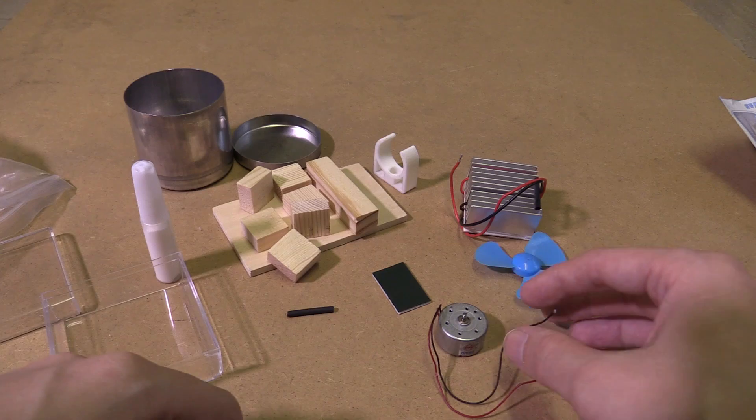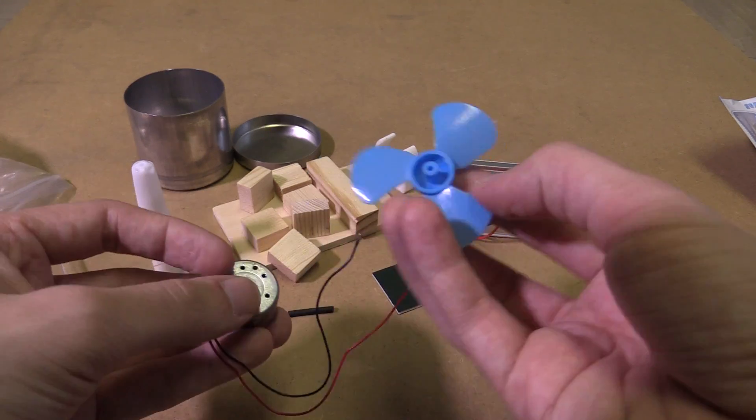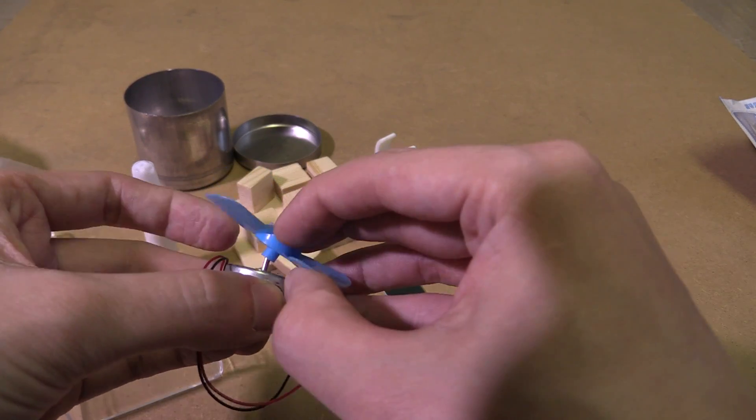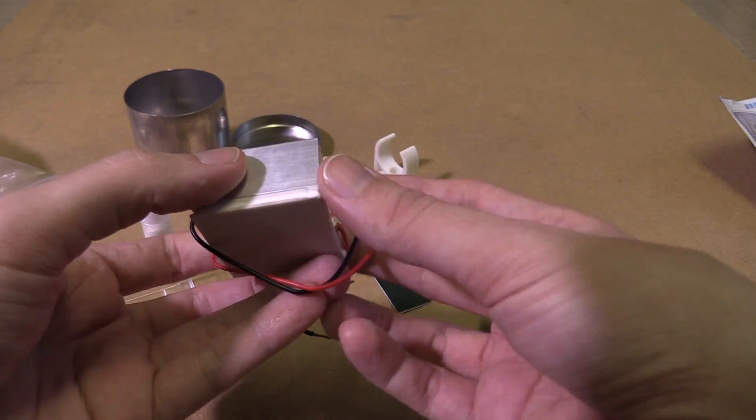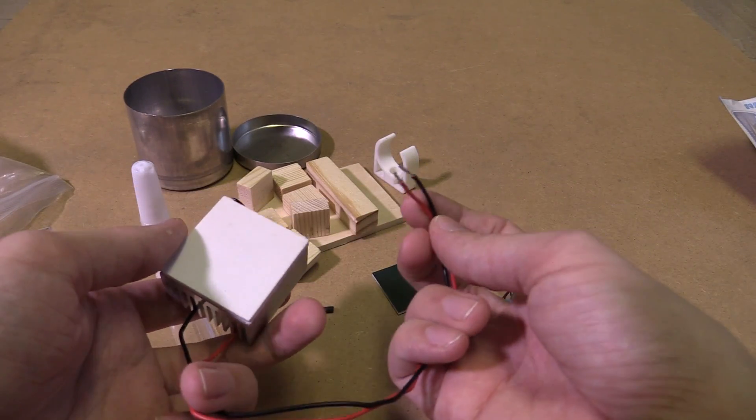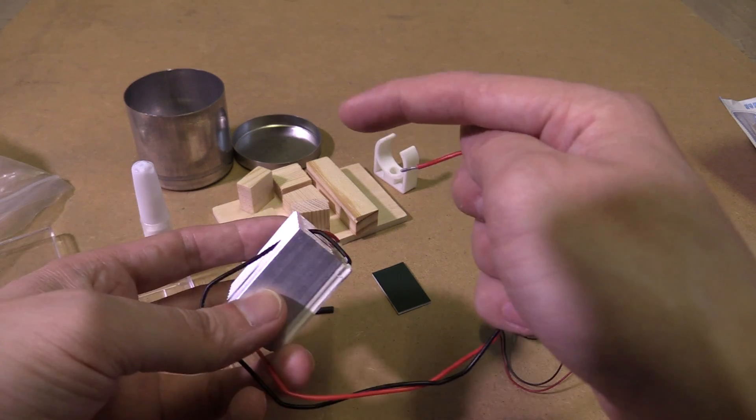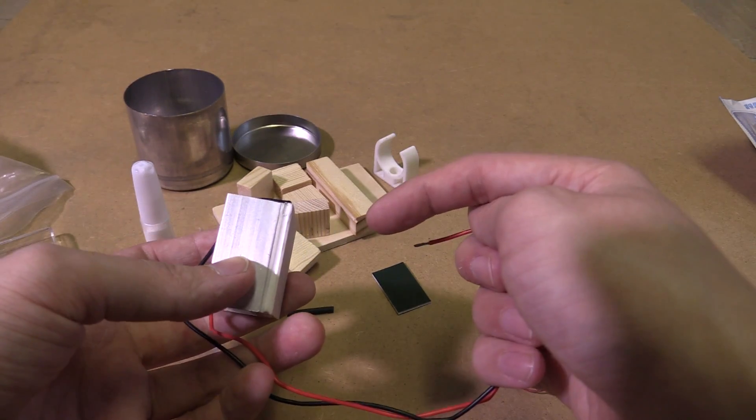So let's have a look at what's included with the kit. We've got a motor with a fan blade, so let's pop that blade on there. Then we've got a Peltier module here with a heat sink connected. Now typically these Peltier devices, if you apply electricity, one side gets hot and one side gets cold.